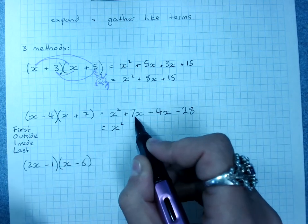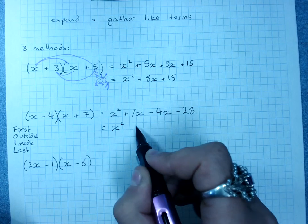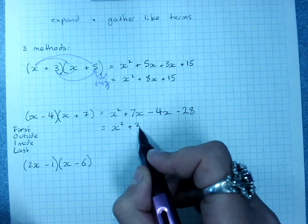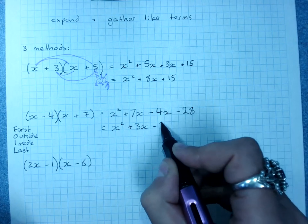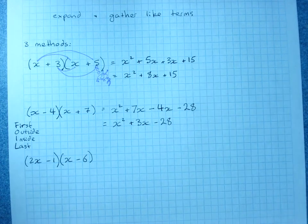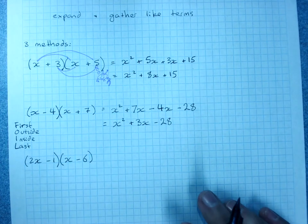Gather your like terms. x squared, plus 7x, minus 4x, will give me plus 3x, minus 28. Be very careful with your negatives. Watch where they go. So that's FOIL.